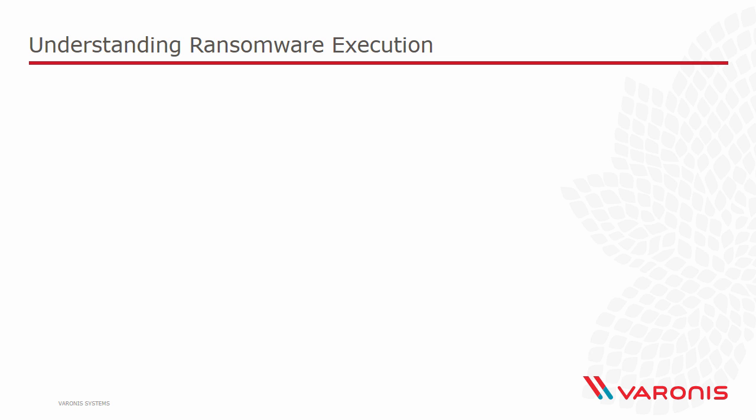In early 2016 we saw the emergence of the Locky ransomware variant, and Locky has proven to be particularly effective in part because it is actually very good at encrypting files. It does exactly what encryption should do — it makes the file inaccessible unless you have the decryption key.